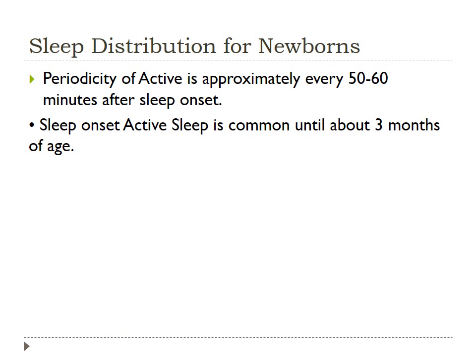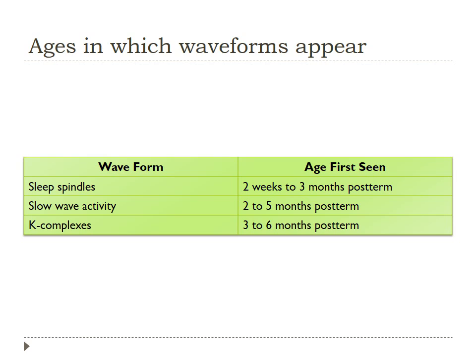For sleep disruption in newborns, periodicity of active sleep is approximately every 50 to 60 minutes after sleep onset. Sleep onset into active sleep is common until about three months of age. For quick reference, sleep spindles should appear around two weeks to three months post-term, slow-wave activity two to five months post-term, and K-complexes three to six months post-term.